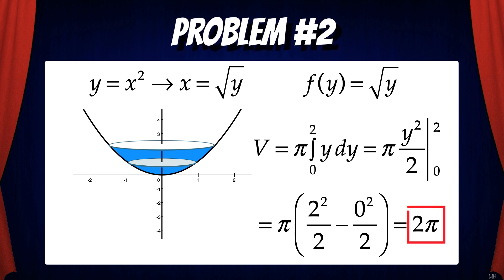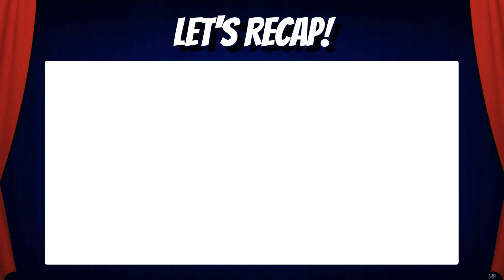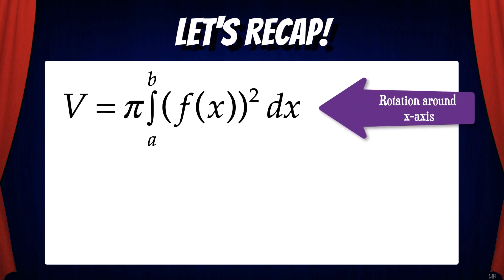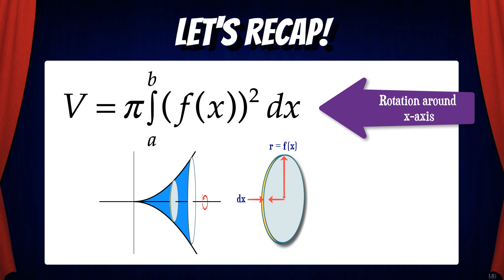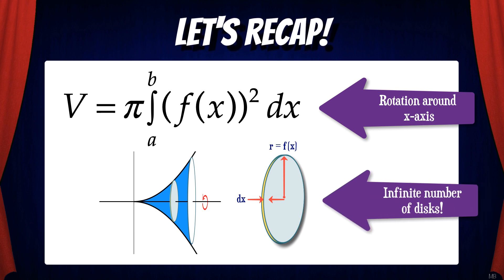We got it — that's the volume of the solid of revolution. So let's recap. To find the volume of a solid of revolution around the x-axis using the disk method, you multiply π times the integral from a to b of [f(x)]² dx. The limits of integration a and b are x-values because we're taking an infinite number of vertical rectangular strips and rotating them around the x-axis, producing an infinite number of cylindrical disks perpendicular to the x-axis.